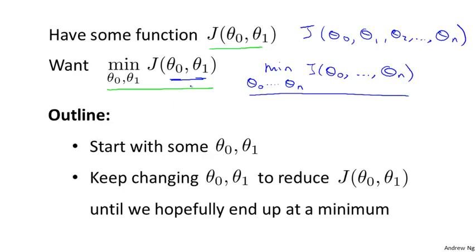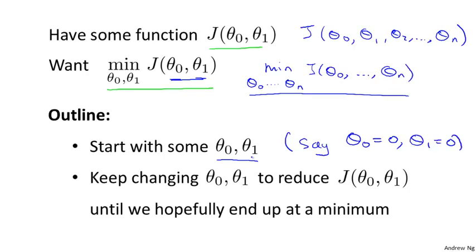Here's the idea for gradient descent. What we're going to do is start off with some initial guesses for theta_0 and theta_1. Doesn't really matter what they are, but a common choice would be to set theta_0 to 0 and theta_1 to 0 — just initialize them to 0. What we're going to do in gradient descent is keep changing theta_0 and theta_1 a little bit to try to reduce J of theta_0, theta_1, until hopefully we wind up at a minimum, or maybe a local minimum.